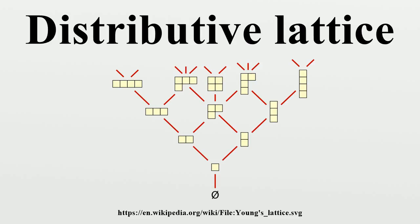Distributive lattices are ubiquitous but also rather specific structures. As already mentioned, the main example for distributive lattices are lattices of sets, where join and meet are given by the usual set-theoretic operations. Further examples include: the Lindenbaum algebra of most logics that support conjunction and disjunction is a distributive lattice, i.e., 'and' distributes over 'or' and vice versa.